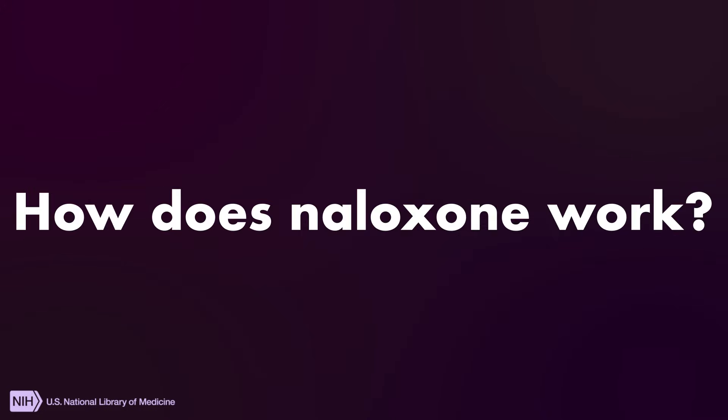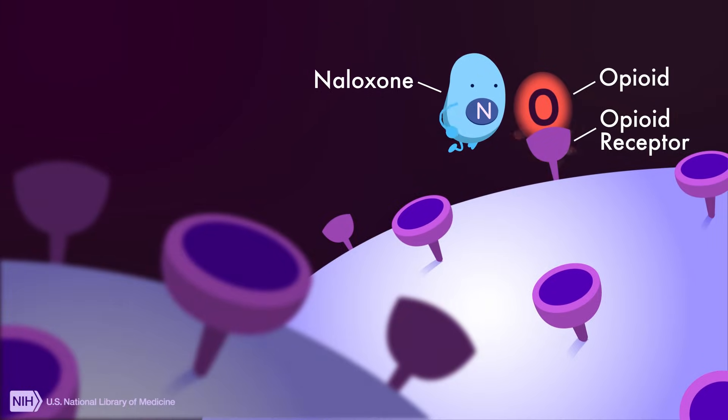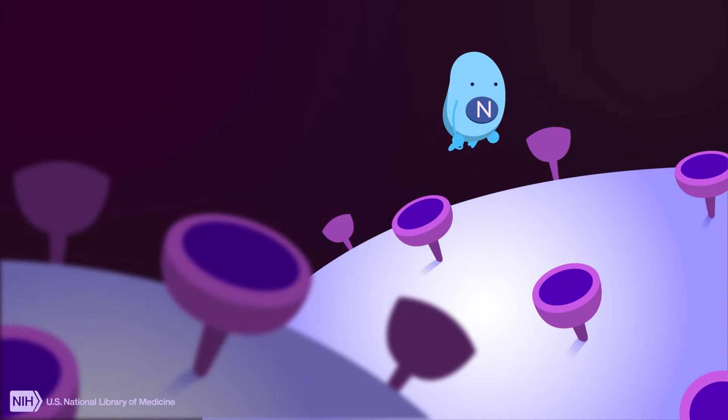How does naloxone work? Naloxone is an opioid antagonist, which means that it blocks opioid receptors from being activated.